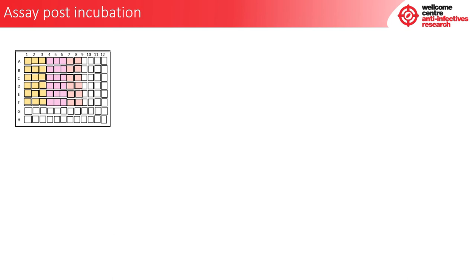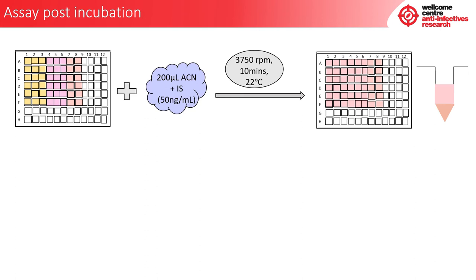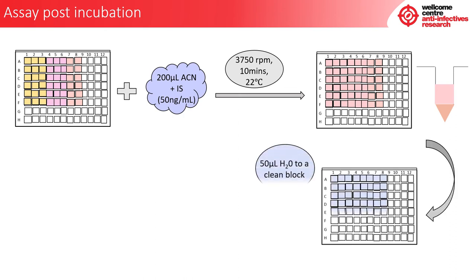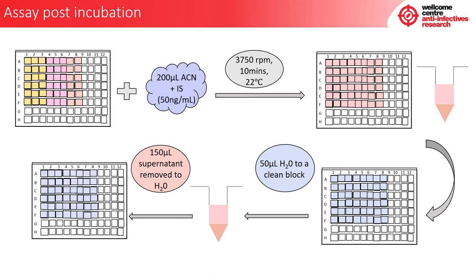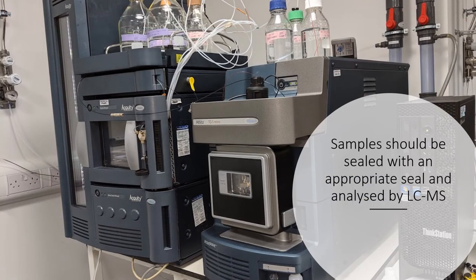Now we have our 2 ml 96-well deepwell block containing all samples. Add 200 microlitres of acetonitrile with internal standard. Next, centrifuge the block at 3,750 rpm for 10 minutes at 22 degrees Celsius to pellet any remaining fibrinogen. While the block is in the centrifuge, get a clean 96-well 2 ml deepwell block and add 50 microlitres of deionised water into the same positions as the sample block. Once the centrifuge has completed, take 150 microlitres of supernatant and transfer it into the block with the deionised water. The block can now be sealed and is ready for LC-MS analysis.